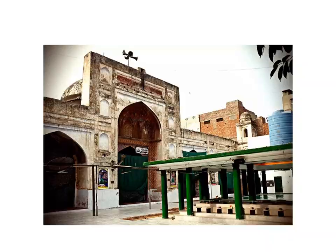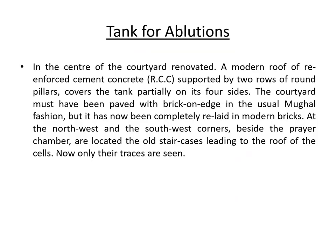You can see the courtyard here. This is the facade of the mosque, and the green color shows the tank for ablution. In the center of the courtyard, a modern roof of reinforced cement concrete supported by two rows of round pillars covers the tank on its four sides. The courtyard was originally paved with brick tiles in the usual Mughal fashion, but has now been completely relaid in modern brick.